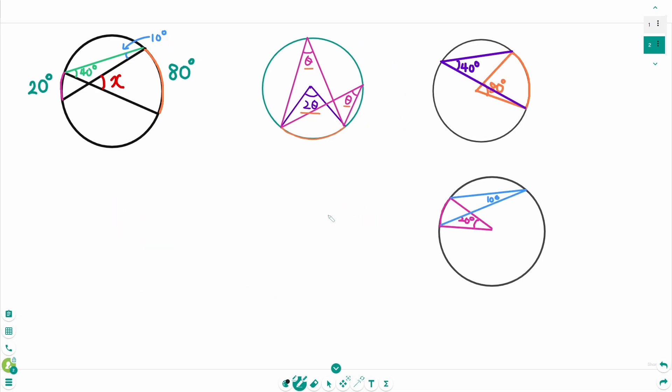Now use the external angle theorem. Angle a and b. This angle is a plus b. Then from here the shape is like this. This angle is 40 degrees, this angle is 10 degrees, and x.